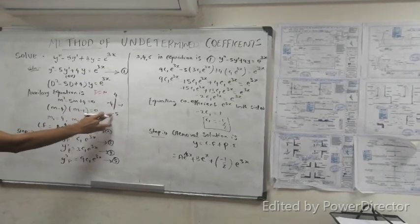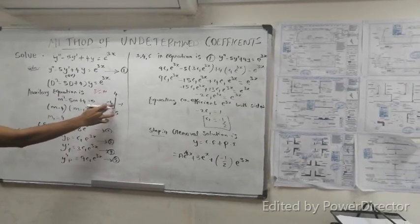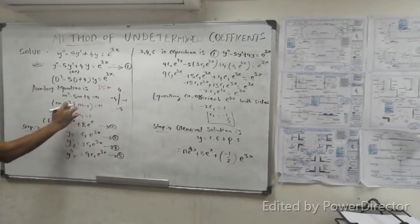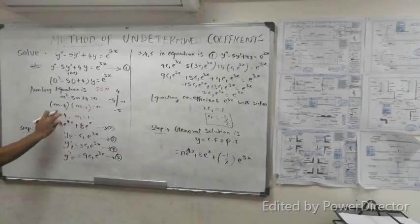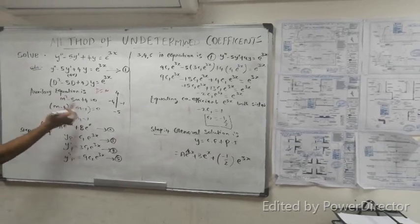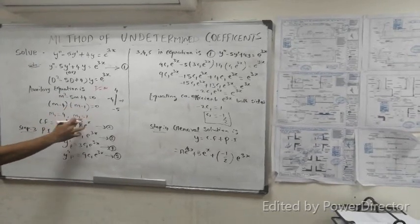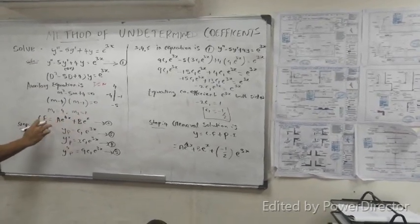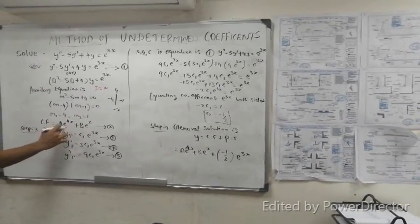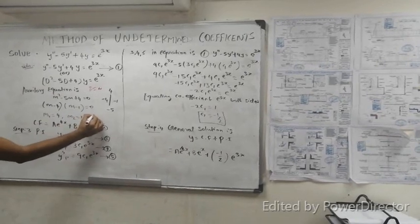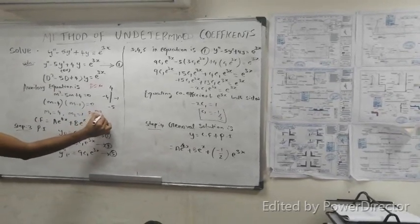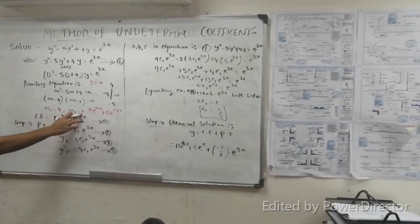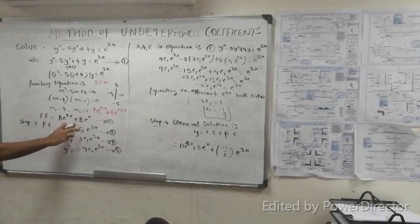Factoring this: (m - 4)(m - 1) = 0. So m1 = 4 and m2 = 1. The complementary function is y_c = A e^(m1·x) + B e^(m2·x).